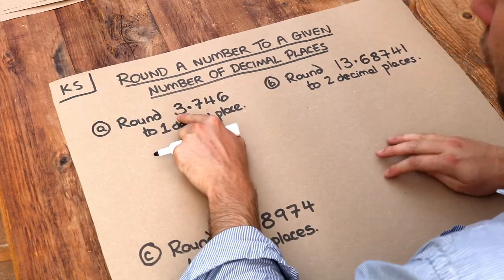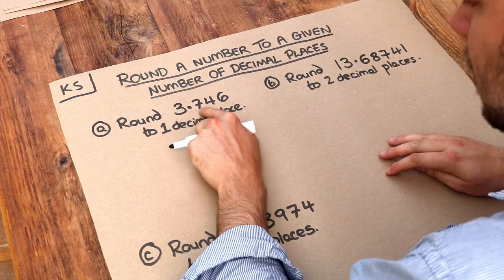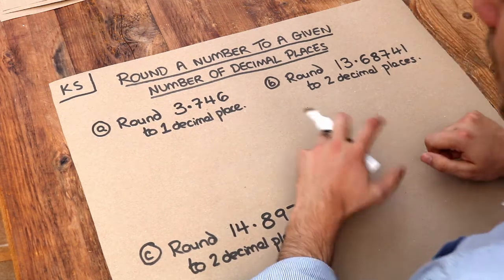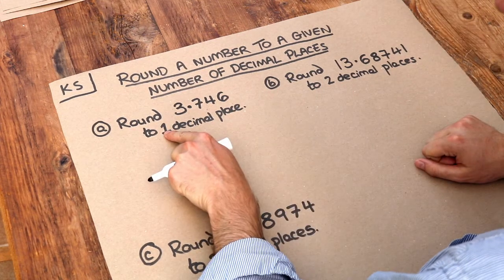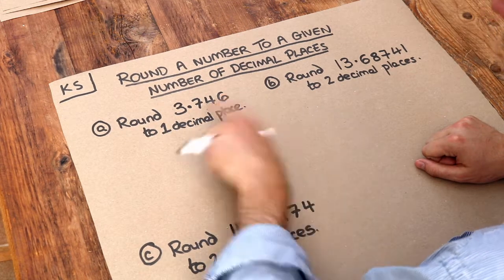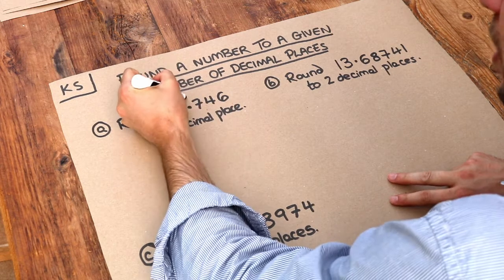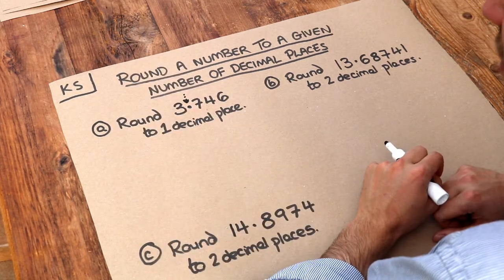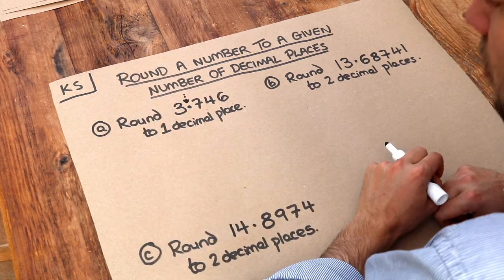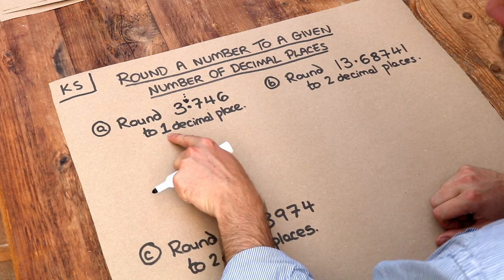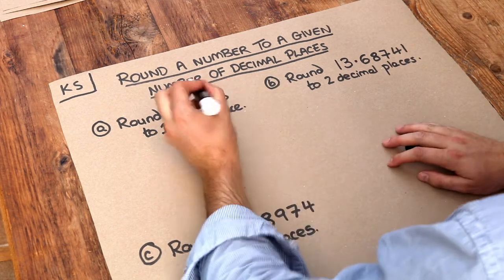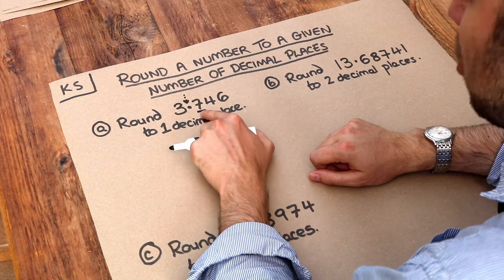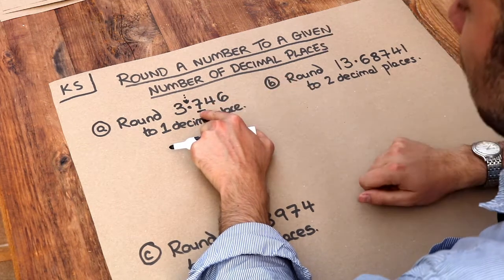If we want to round 3.746 to one decimal place, that means we want to keep one digit after the decimal point. Remember that this dot is the decimal point. So if we want to keep one digit after the decimal point, let's just underline that. What we do is we always check the digit after the one we've underlined.